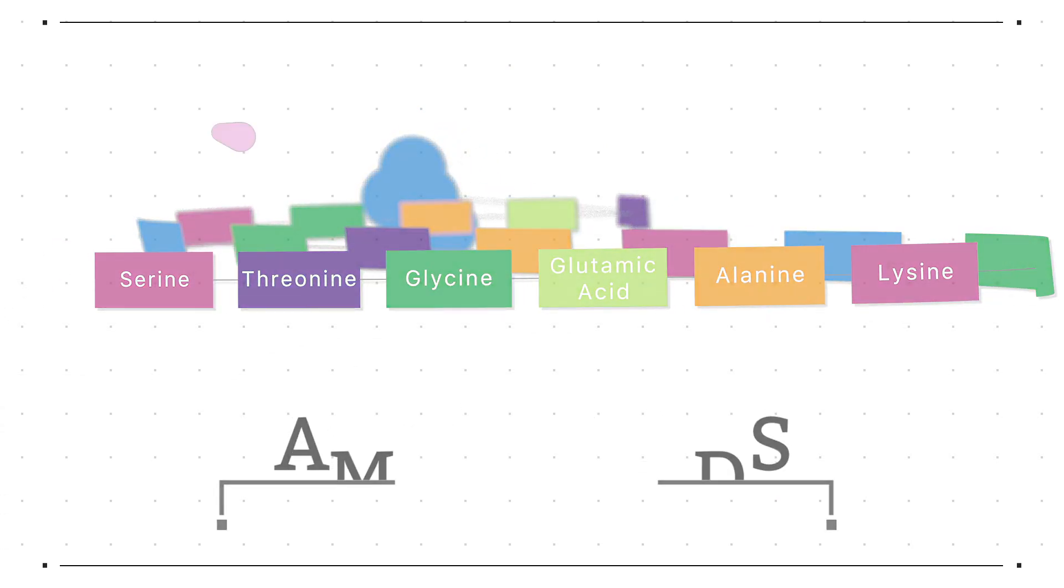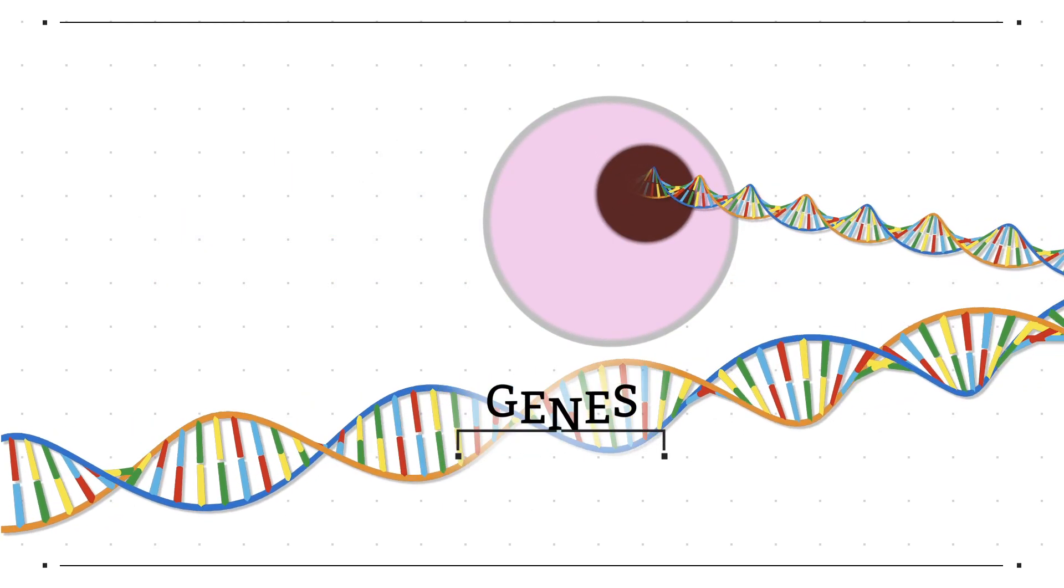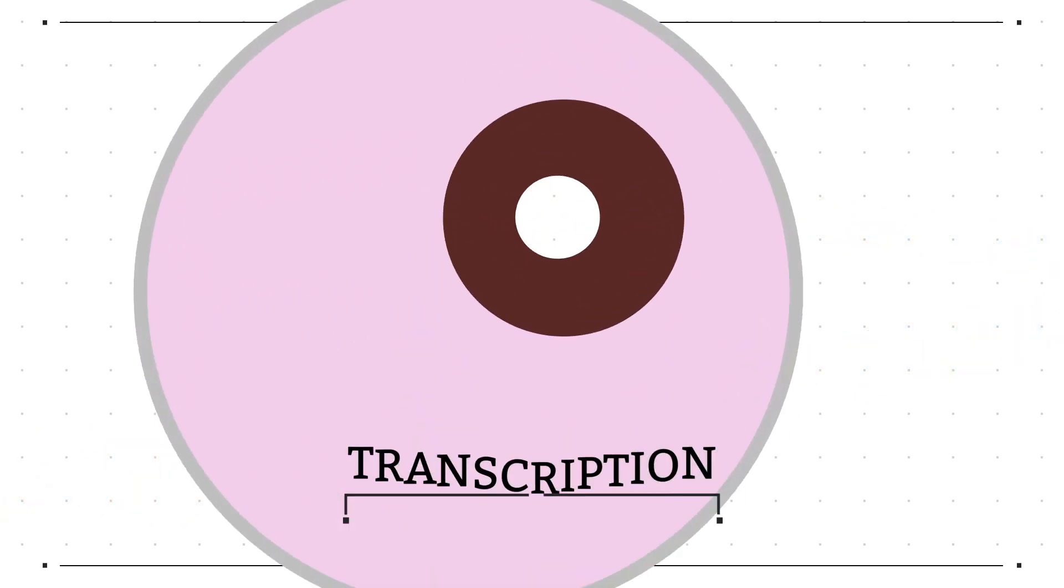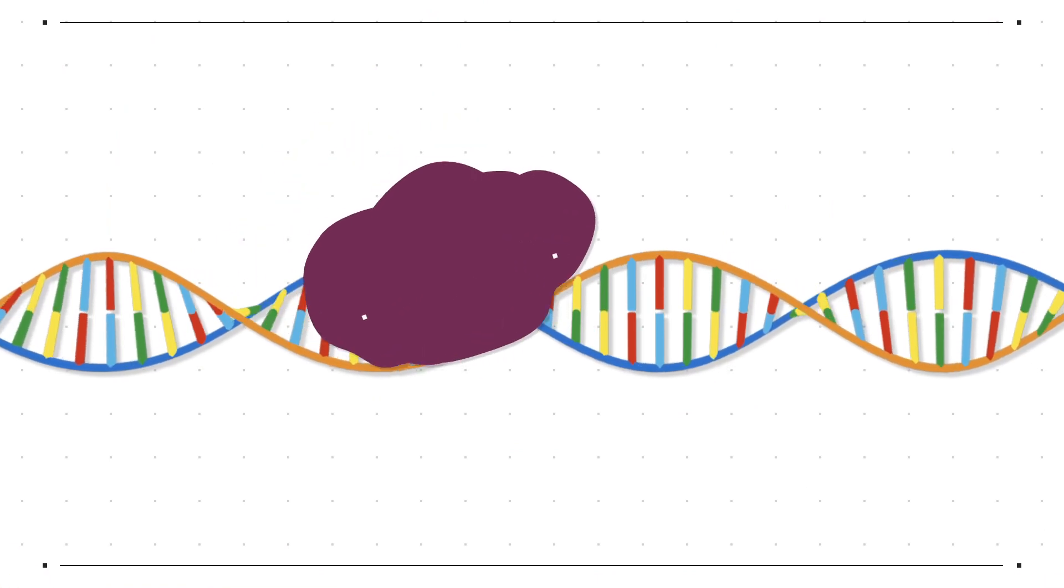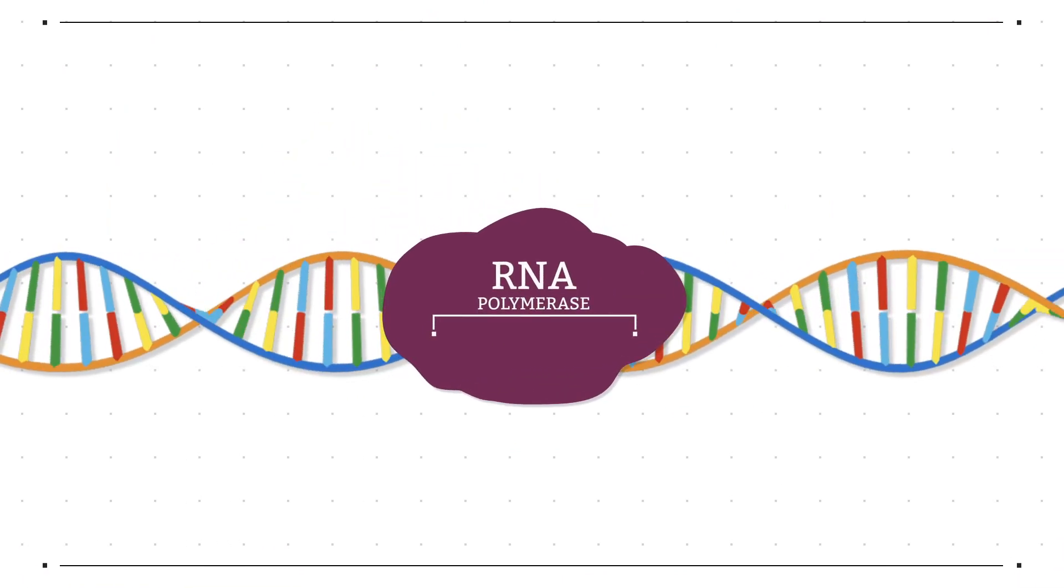The information for building them is stored within our genome in stretches of DNA called genes. The first stage of protein synthesis called transcription begins in the nucleus of the cell where an enzyme called RNA polymerase attaches to the start of the gene.